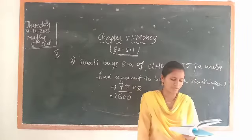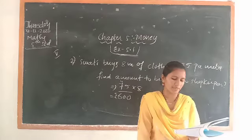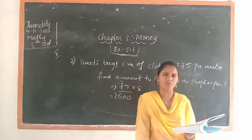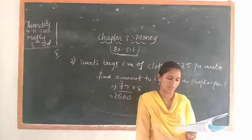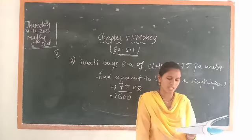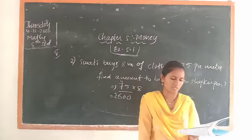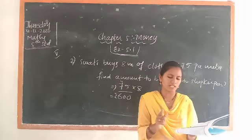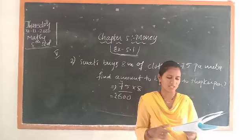In the fifth question, the cost of a table is rupee 4,320. What is the cost of 16 tables? Multiply rupee 4,320 into 16 and you will get the value.